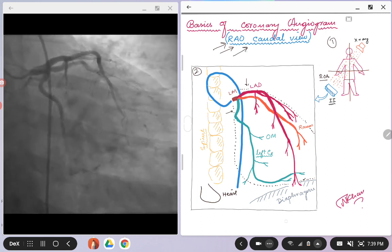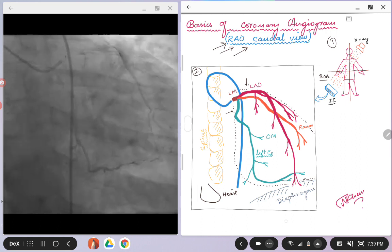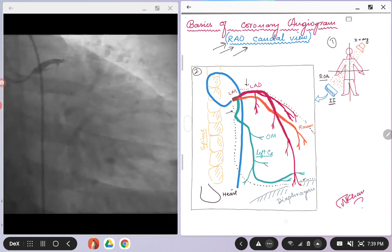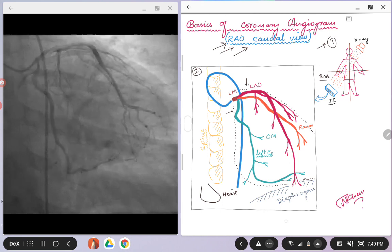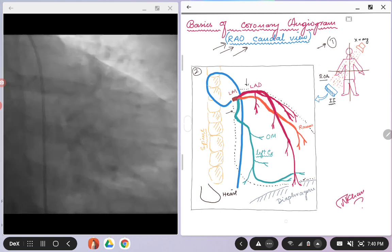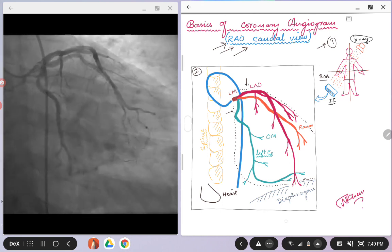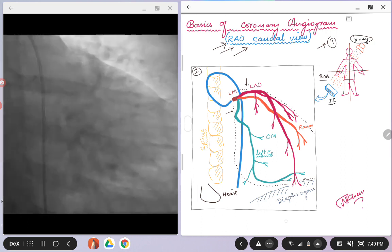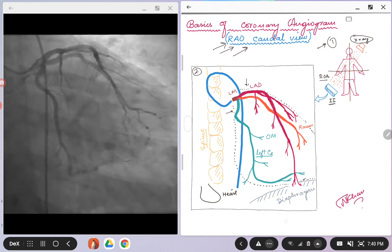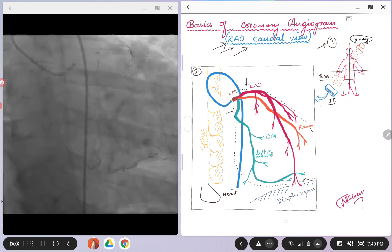So with that we come to the RAO caudal view. Going back to picture one here just to refresh the memory, we know that if the patient is lying on a cath lab table, the x-ray is in the opposite direction as compared to the view.